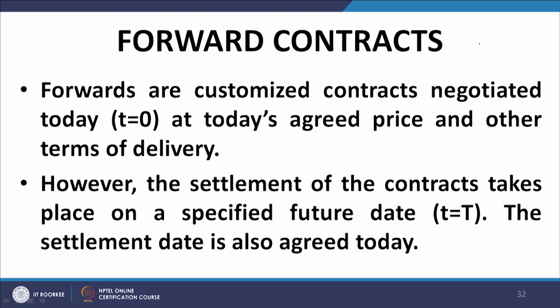The basic types of derivatives are forward contracts, futures contracts, options, and swaps. To explain forward contracts with an example: in a normal spot transaction, you go to the market, select a calculator, pay the price, and the vendor hands you the calculator. The payment and goods are received immediately with the negotiation — you negotiate the price, pay the price, and receive the calculator. Everything is spontaneous, which is why it is called a spot transaction or cash transaction.